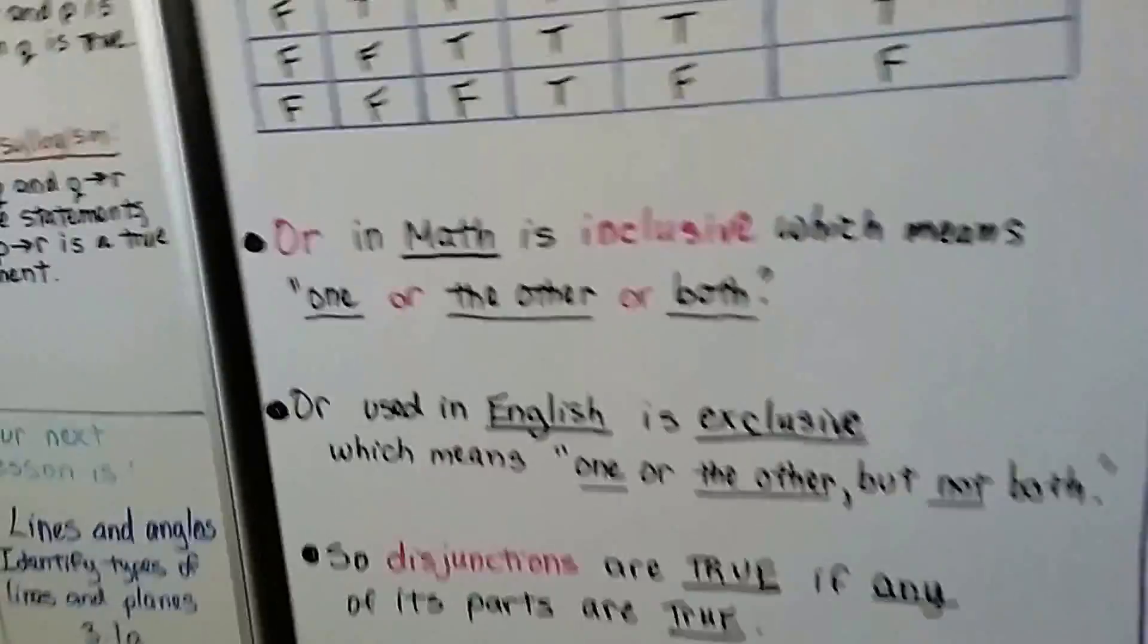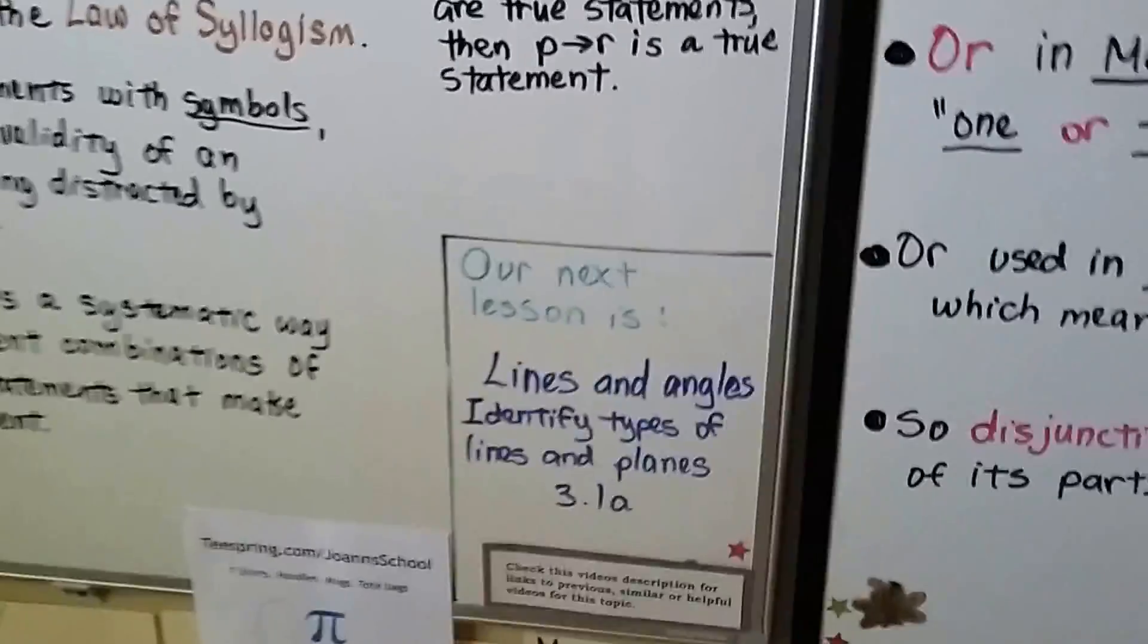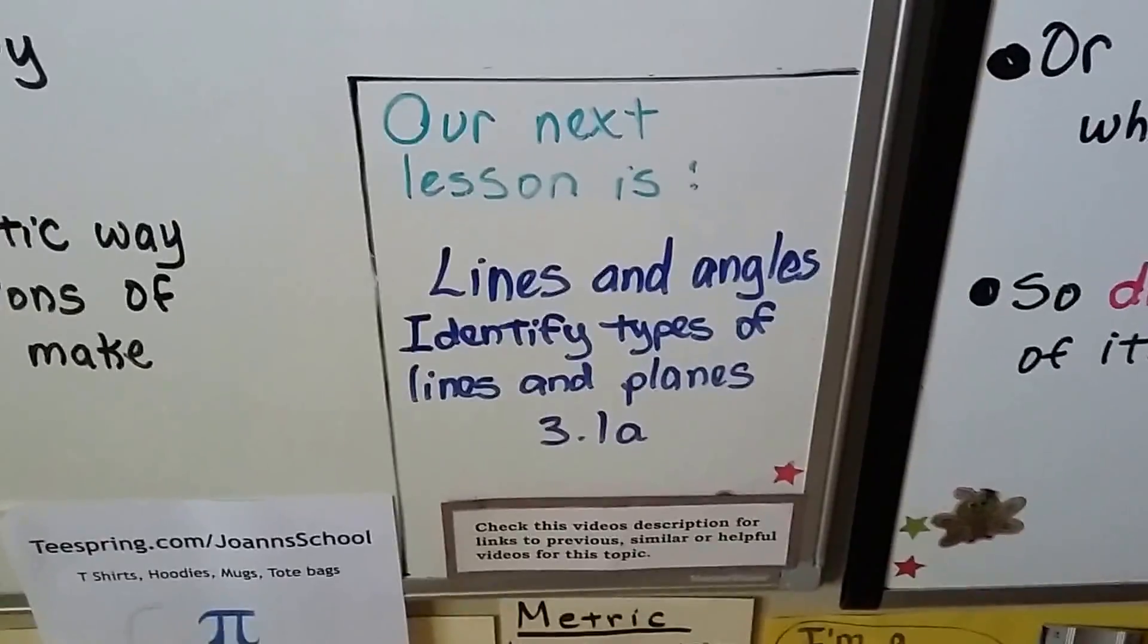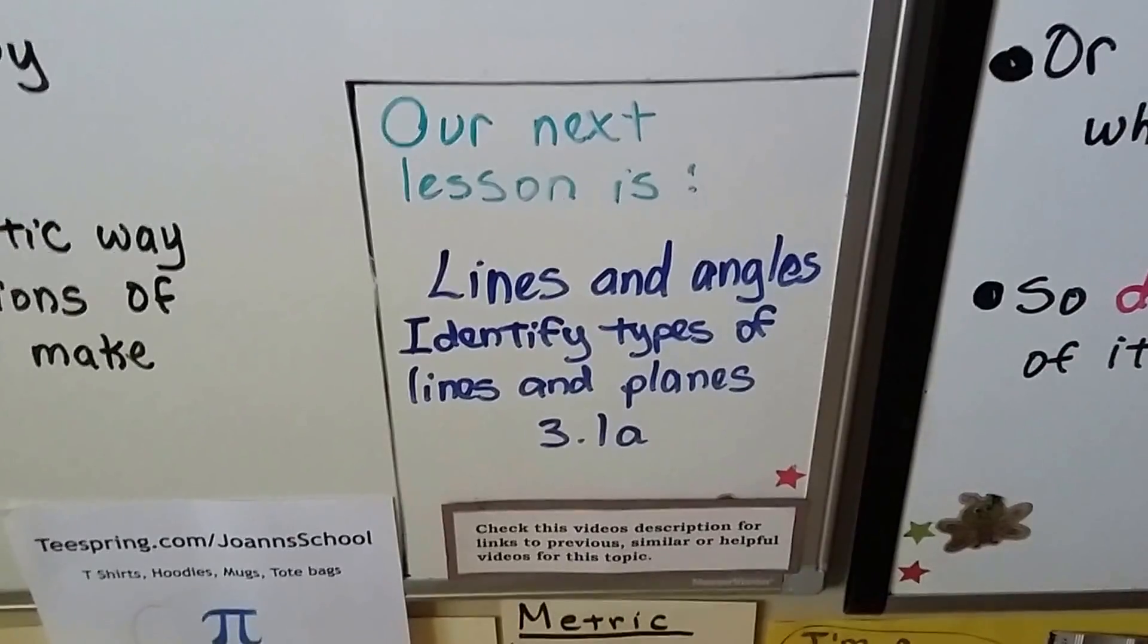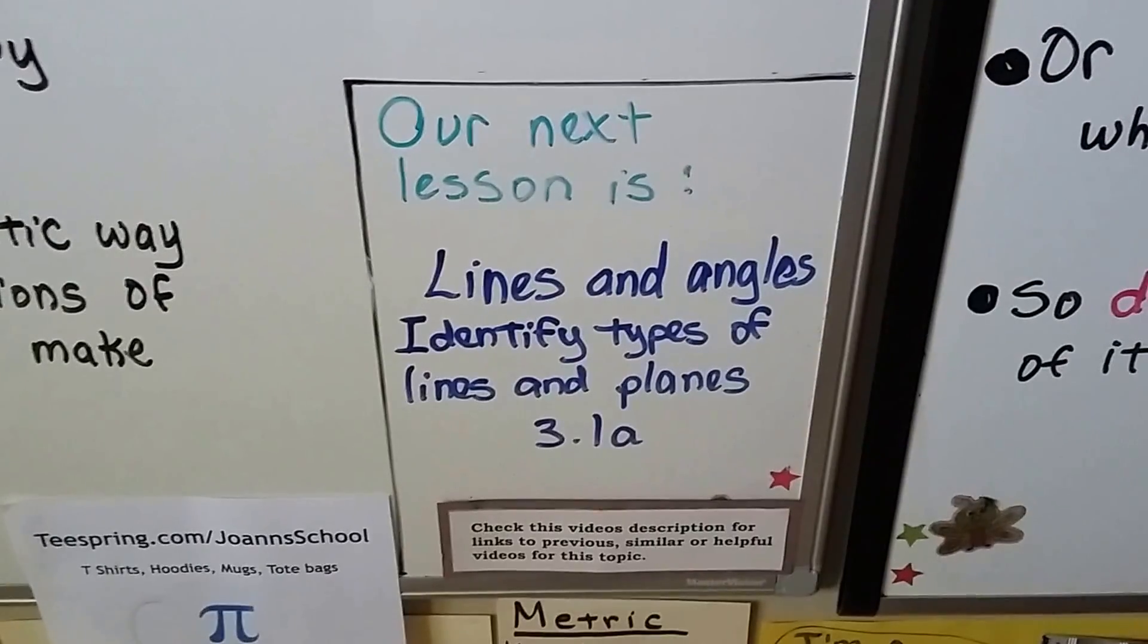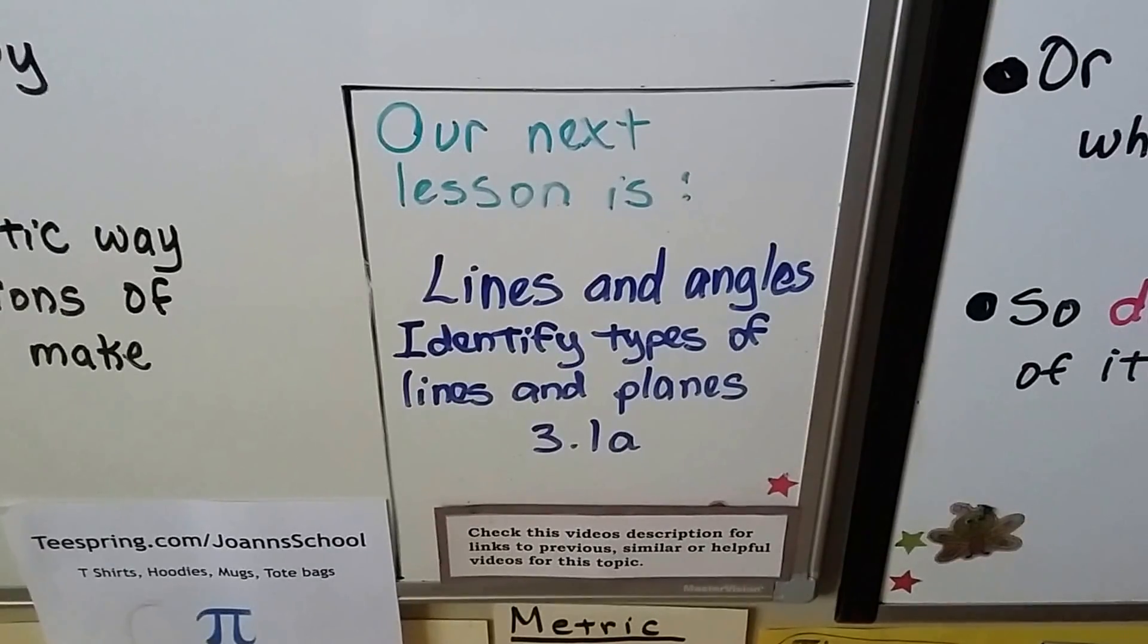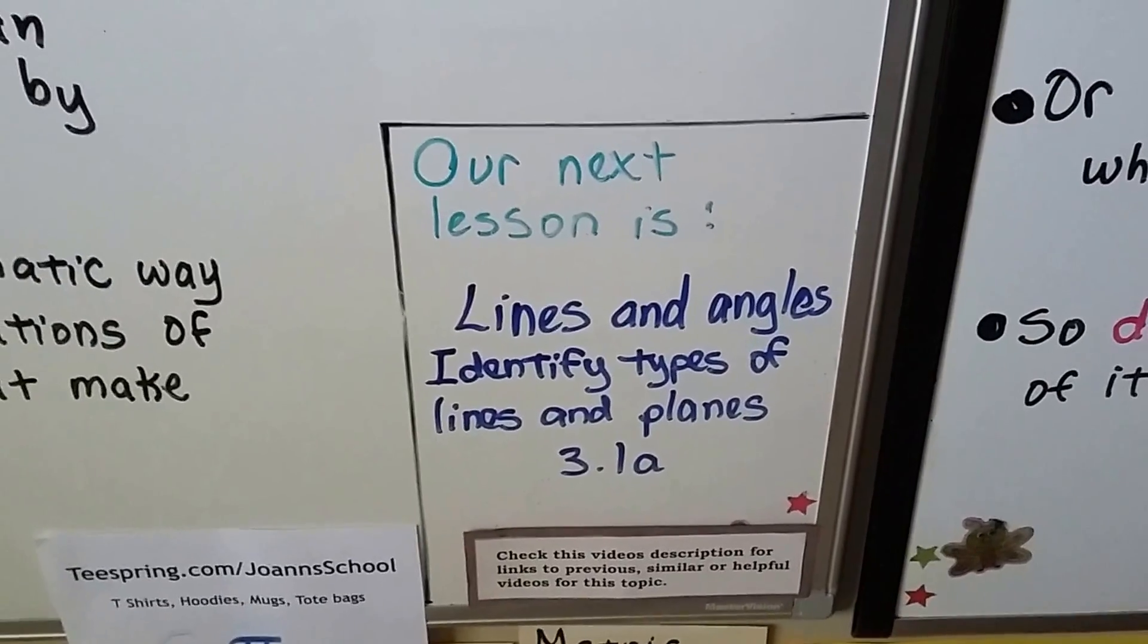So I know this can be a lot to take in. You might have to watch the video again a second time. And you're going to have to play with these truth tables and try to remember what all these symbols are. And I'll talk to you next time in Chapter 3. We're going to discuss lines and angles and identify types of lines and planes in 3.1a.